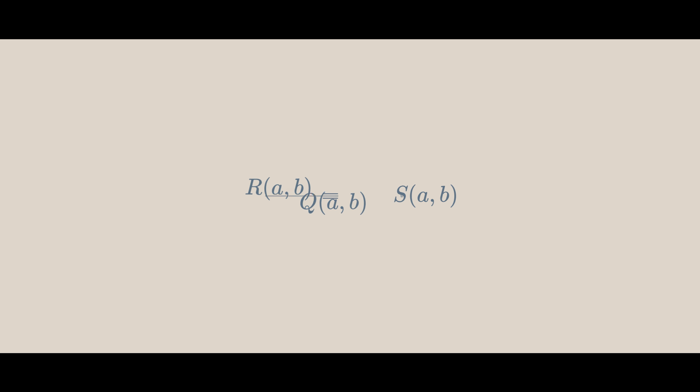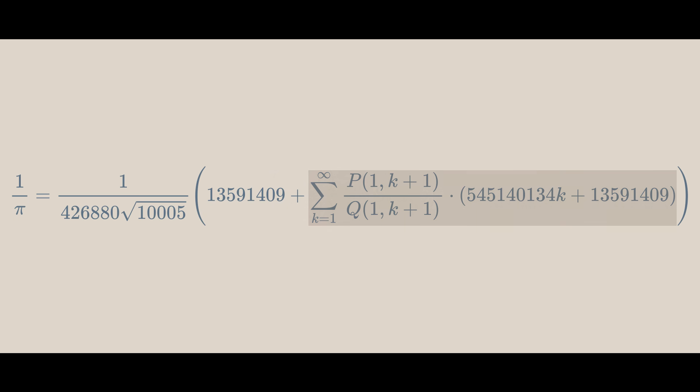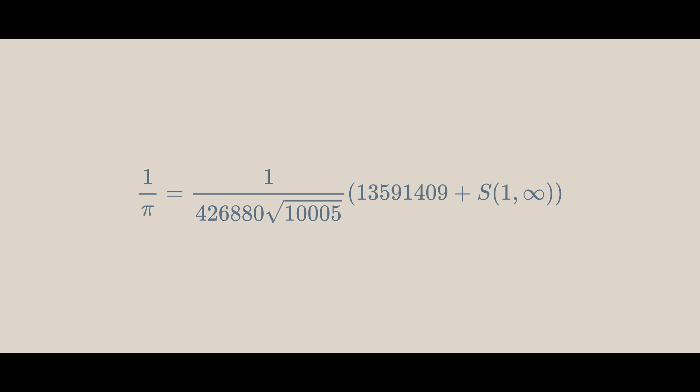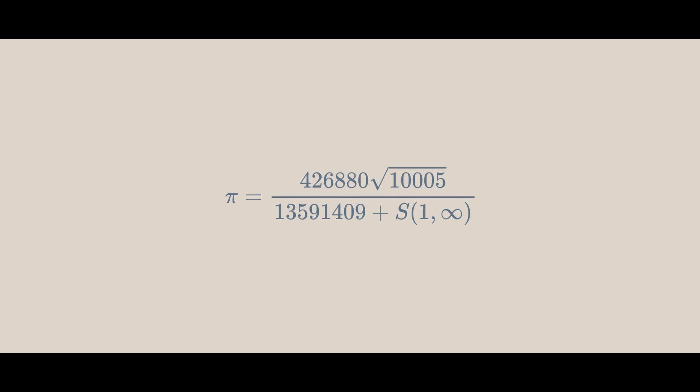Using the original definition for R(a,b), we can see that S(a,b) equals R(a,b) over Q(a,b). Now, let's go back to here. This sum is just S(1, infinity). Let's solve for pi. We can never compute S(1, infinity). So instead, we compute S(1,n) and as n approaches infinity, our pi approximation will get better. Now, we can replace S(1,n) with R(1,n) over Q(1,n) and simplify. This is the final calculation we will do to approximate pi.